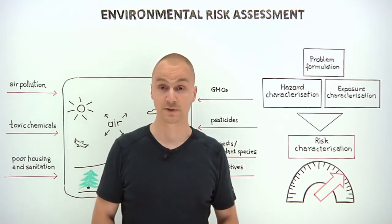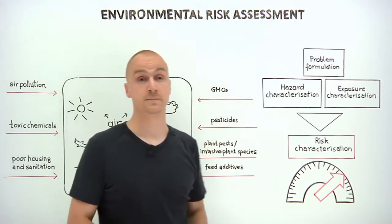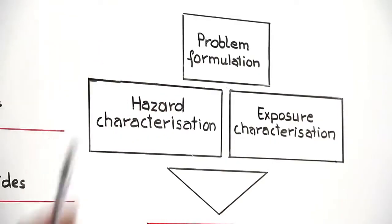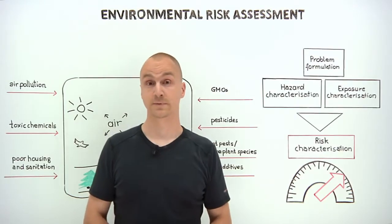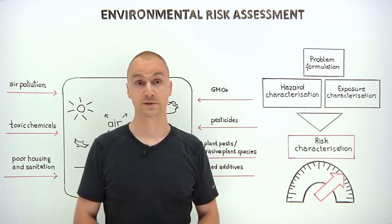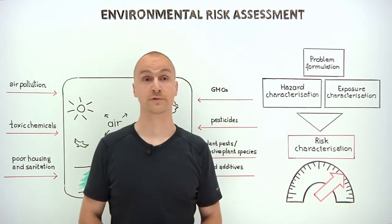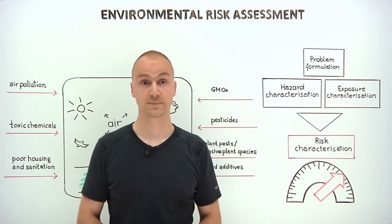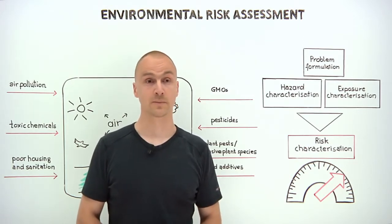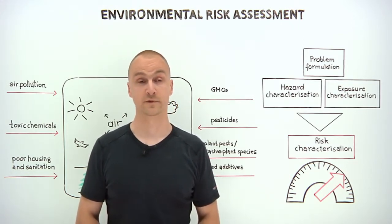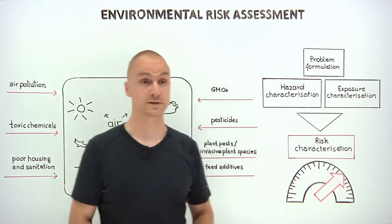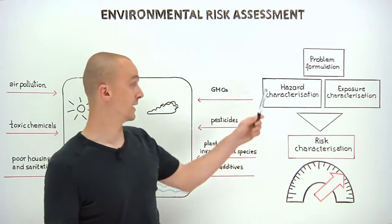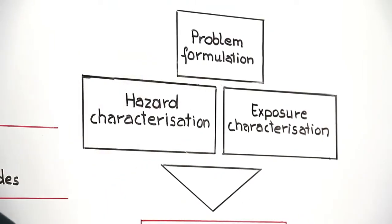Problem formulation is the first critical step because it defines the scope of the environmental risk assessment by specifying what needs to be protected from harm and by identifying potential harmful effects. Problem formulation is then followed by a hazard and an exposure characterization.